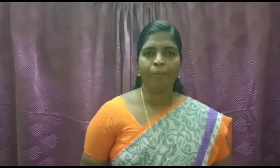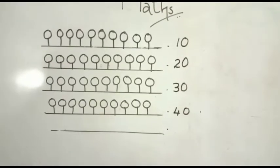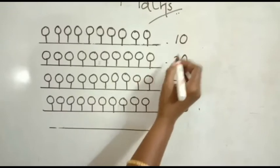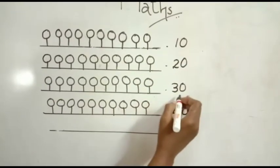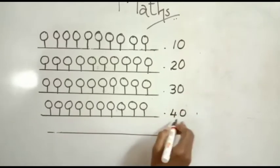Then next number. After 41, the next number is 42. Look here. 10 is one ten. Two tens, 20. Three tens make 30. Four tens make 40.